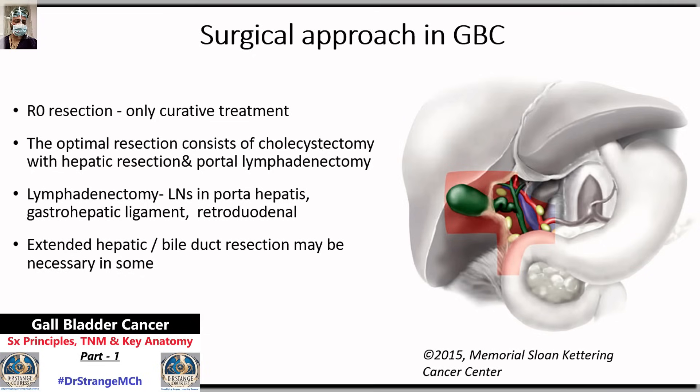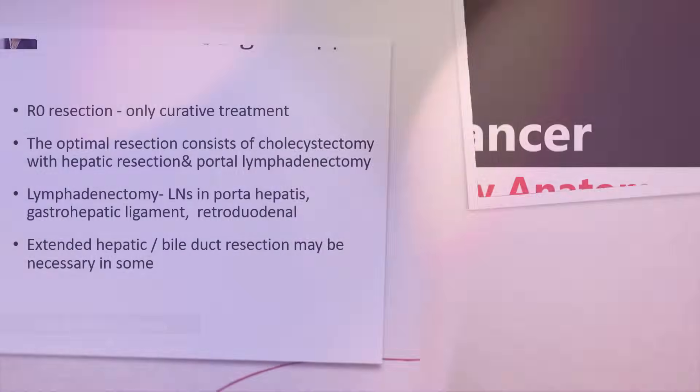Extended hepatic or bile duct resection may be necessary, and that we will cover in multivisceral resection — the rationale, the benefits, and the disadvantages. This picture is from the Memorial Sloan Kettering paper, and all the area highlighted in pink color has to be cleared as part of radical extended cholecystectomy.